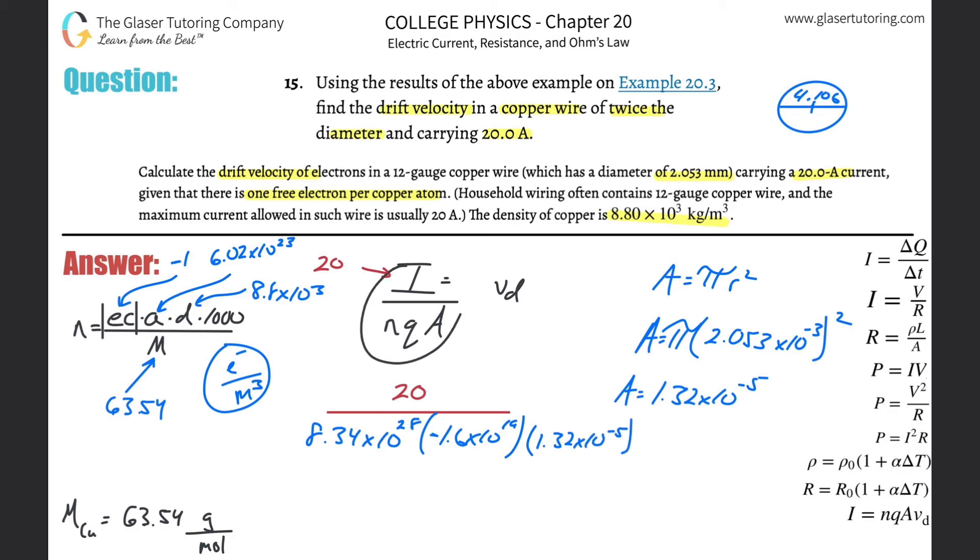And now we can find the drift velocity because we know all those variables. So what do we get? So it's going to be 20 then divided by parentheses. I'm going to use all the exact values. So this 8.3 blah blah blah times then 1.6 times 10 to the minus 19th, and it's negative, don't forget that, and then multiplied by 1.32 times 10 to the minus 5th. So this works out to be about 1.14 or so times 10 to the minus 4th, and that's in meters per second. It's negative. All the negative sign tells us here is that it's moving. The electrons are moving in the opposite direction of the conventional current.